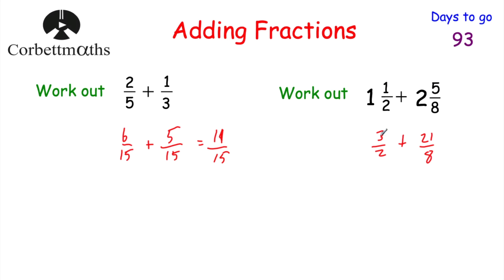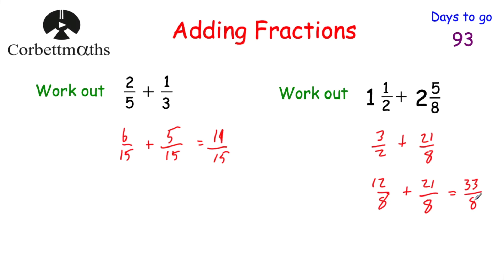So we have three halves plus 21 eighths. We need a common denominator — the lowest common multiple of 2 and 8 is 8. The 21 eighths stays as is. For three halves, we multiply top and bottom by 4: 3 times 4 is 12, giving 12 eighths. So 12 eighths plus 21 eighths equals 33 eighths. Since the question used mixed numbers, I'd convert back: 4 eights is 32, with 1 left over, so the answer is four and an eighth.